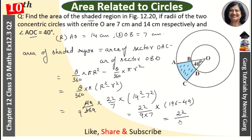Then 22 upon 9 into 7 into, after subtraction this becomes 147. This 7 cancels to become 21, then cancels with 3 to become 7. This 3 and we get the answer 154 upon 3 cm square. This is our final answer.